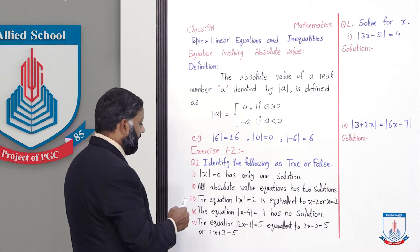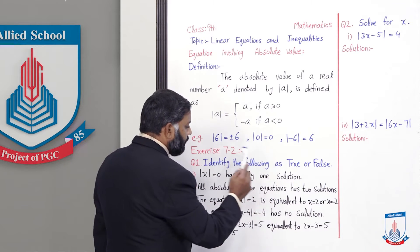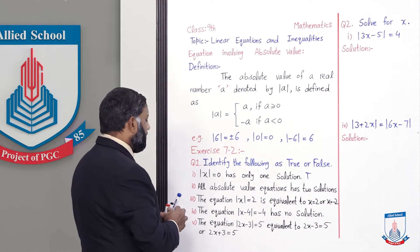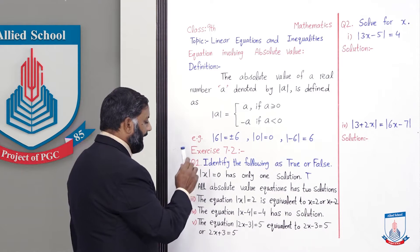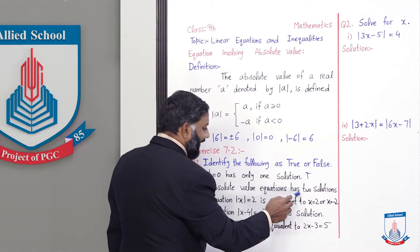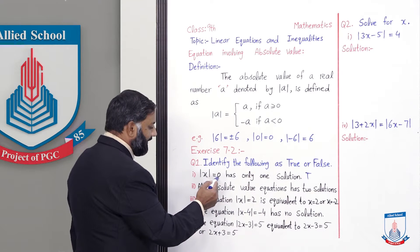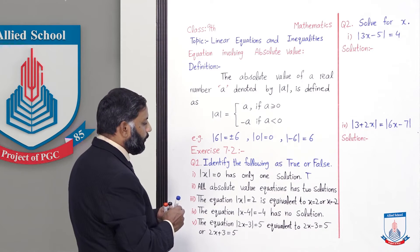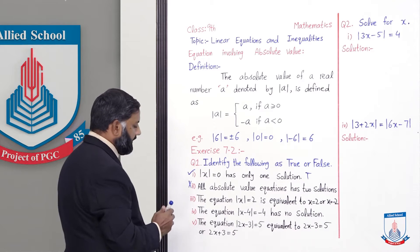Now starting Exercise 7.2 — identify the following as true or false. First statement: |x| = 0 has only one solution. This statement is TRUE, because as we just read, zero has neither plus nor minus, so removing the absolute value gives simply zero, not ±0. Second statement: all absolute value equations have two solutions. This is FALSE, because |x| = 0 has only one solution, so not all absolute value equations have two solutions.